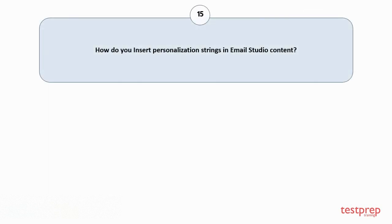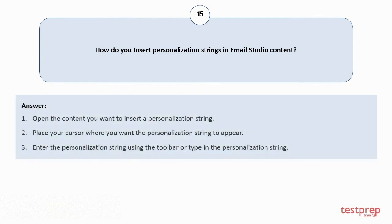Question number fifteen: How do you insert personalization strings in Email Studio content? One, open the content you want to insert a personalization string into. Two, place your cursor where you want the personalization string to appear. Three, enter the personalization string using the toolbar, or type in the personalization string manually.